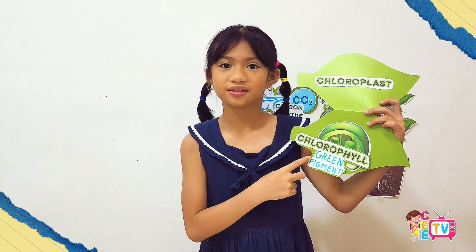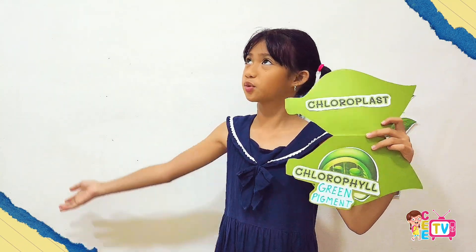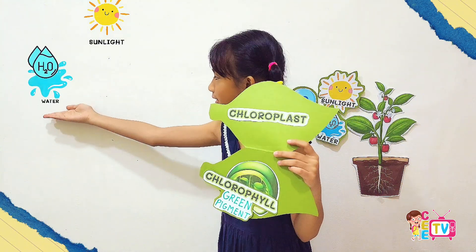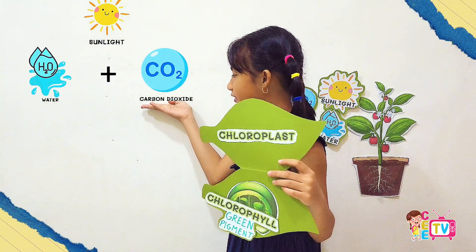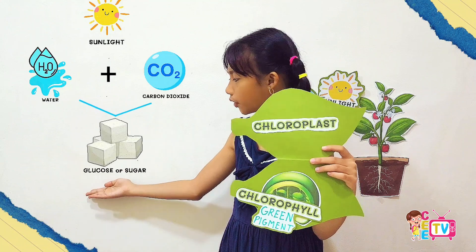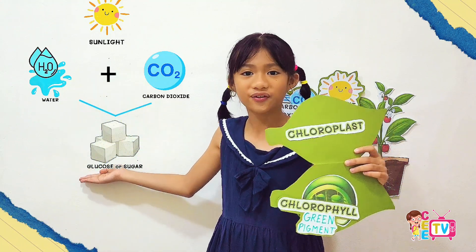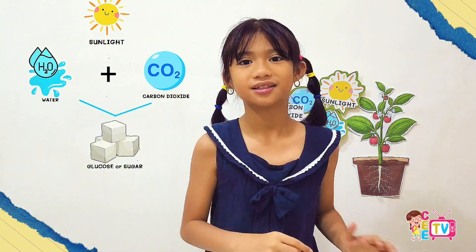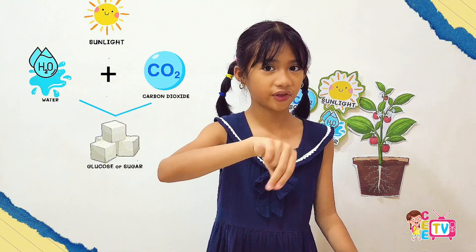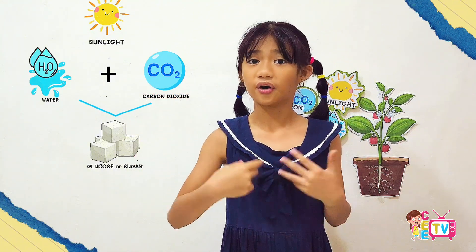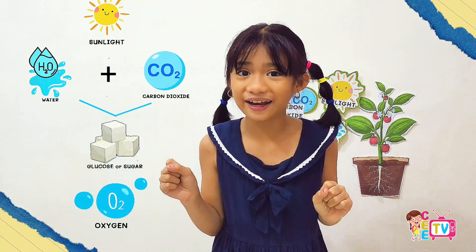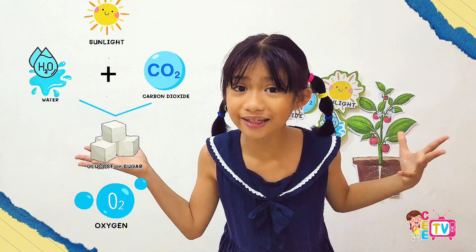Did you know? The chlorophyll is responsible for absorbing sunlight and uses its energy to convert water and carbon dioxide into glucose, or sugar, which is the plant's food. And did you know? When plants cook their own meal, they also produce oxygen — and this is the air we breathe.